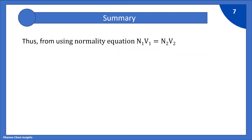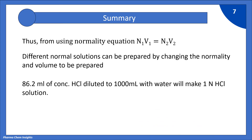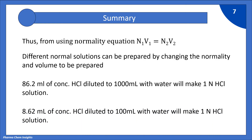Let's summarize what we have learnt. Using the normality equation N1V1 = N2V2, different normal solutions can be prepared by changing the normality and volume to be prepared. You can change the normality and volume as per your requirement. 86.2 ml of concentrated HCl diluted to 1000 ml with water makes 1 normal HCl solution. Similarly, 8.62 ml of concentrated HCl diluted to 100 ml with water will also make 1 normal HCl solution.